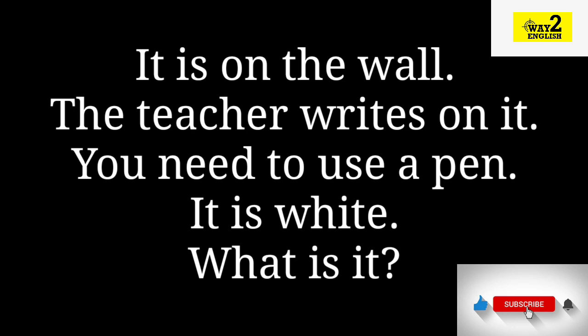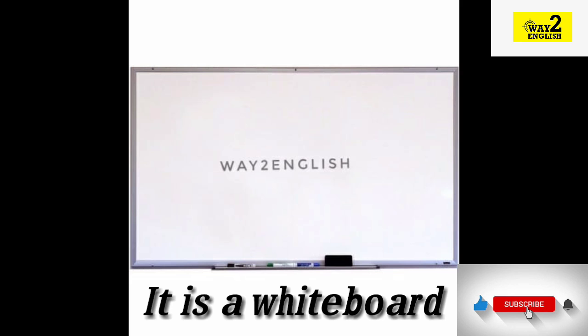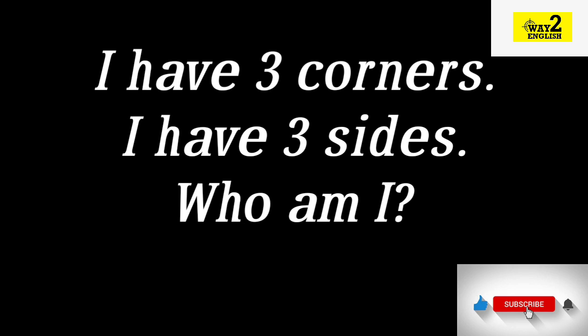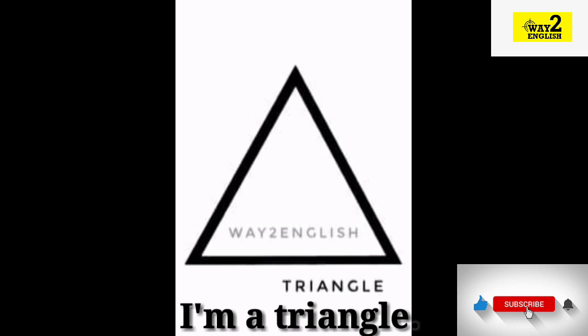It is on the wall. The teacher writes on it. You need to use a pen. It is white. What is it? It is a whiteboard. I have three corners. I have three sides. Who am I? Triangle.